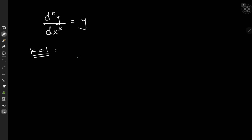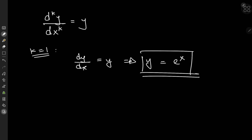For k equal to 1, we have the derivative of y with respect to x being equal to the function itself, which is pretty much the first differential equation you ever come across in a differential equations course. We know exactly what function satisfies this: y equals e to the x. There are constants of integration involved, but we're not interested in those right now.